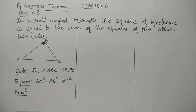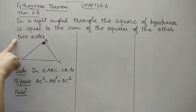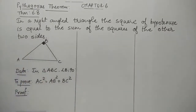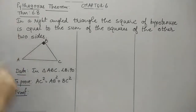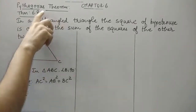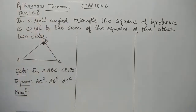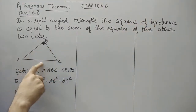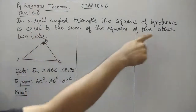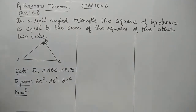Hello students, today we'll start with one of the most important theorems of this chapter — the Pythagoras theorem, that is theorem 6.8. We have to remember the statement. Till the 10th and 9th standard, we have done many sums related to the Pythagoras theorem or the Pythagoras rule. Now today we'll prove this. The statement is: in a right angle triangle, the square of the hypotenuse is equal to the sum of the squares of the other two sides.